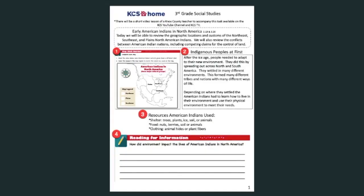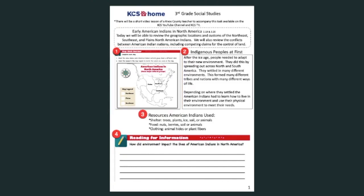Let's look at your KCS at-home packet. Find the section for third grade social studies. Today you will begin by looking at a map of American Indians in North America. You will need to color the area where each American Indian cultural group lived in a different color. If you do not have different colors, then just shade them in with a pencil or draw symbols. Next, you will need to color the boxes in the map legend to match the colors you used on the map. I am going to read the text with you, but after you are finished with the video and are ready to do the lesson activities on your own, I would like for you to reread the text to yourself.